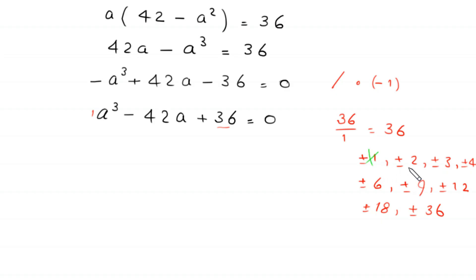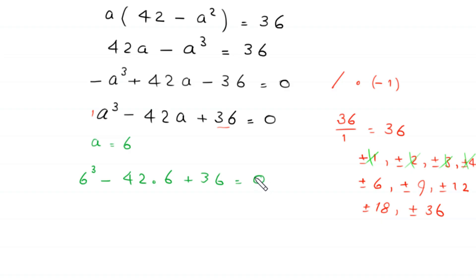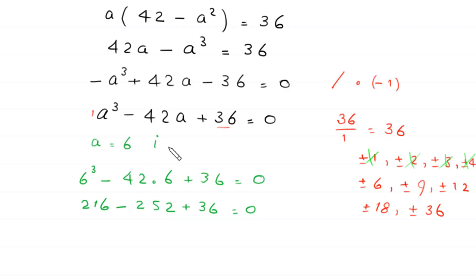Checking a equals 1, 2, 3, 4 — none are solutions. Checking a equals 6: 6 cubed minus 42 times 6 plus 36 equals 216 minus 252 plus 36, which equals 0. So a equals 6 is a solution of this cubic equation, which means a minus 6 is a factor.